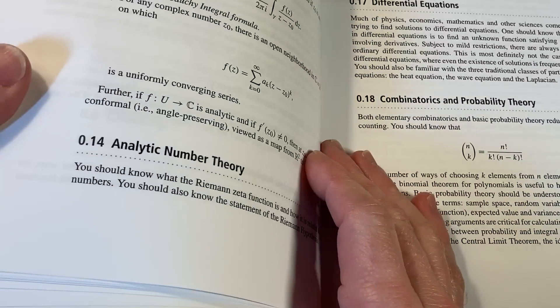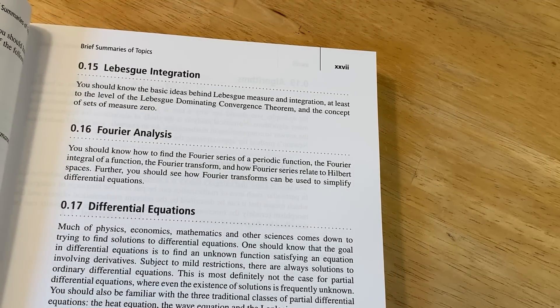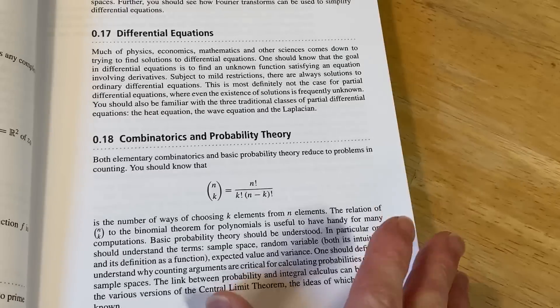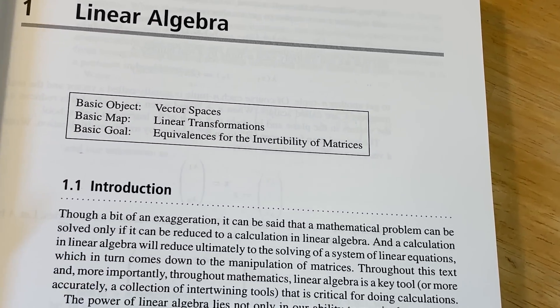Algebraic number theory, complex analysis. And then we have analytic number theory, Lebesgue integration, Fourier analysis, differential equations, combinatorics, and probability theory, algorithms, and category theory. And then this is cool. So look at this. So at the beginning of each chapter, he does this.